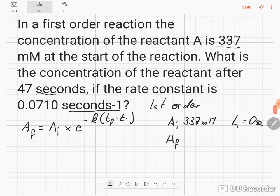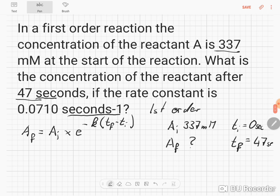Our A final is what we want to find, and our t final is 47 seconds, when we want to evaluate the reaction. Our rate constant equals 0.071 seconds to the minus 1.